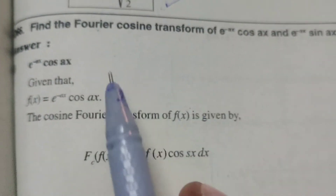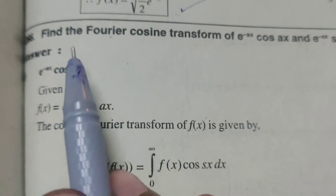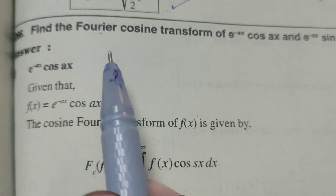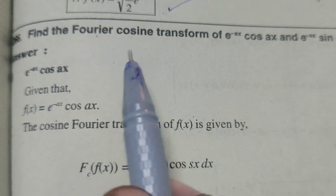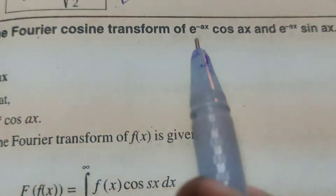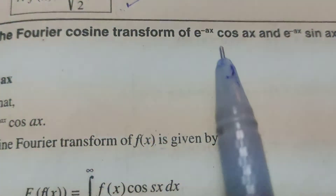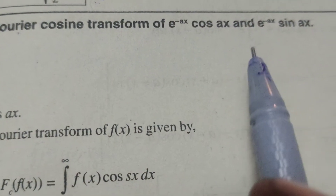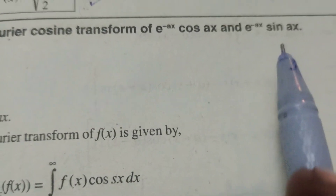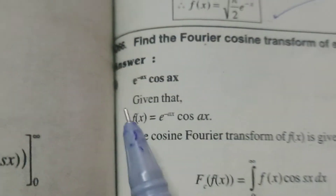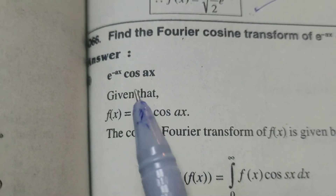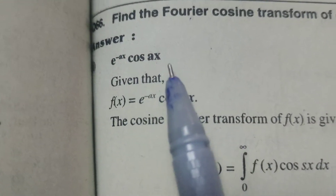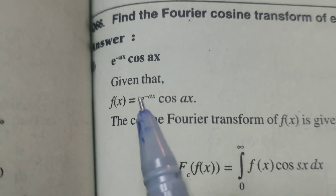Hi everyone, this is Dr. Ati. Today we are going to explain the Fourier cosine transform of e power minus ax cos ax, and e power minus ax sin ax. First of all, find out e power minus ax cos ax.